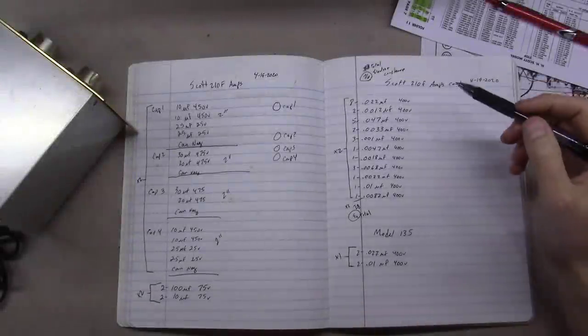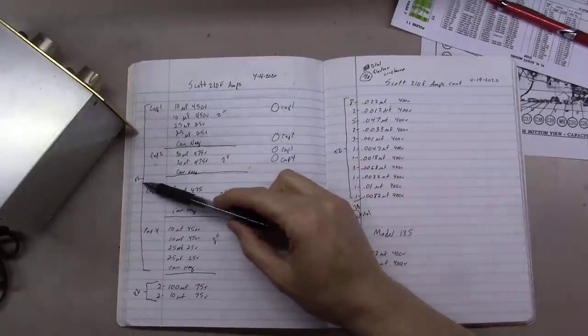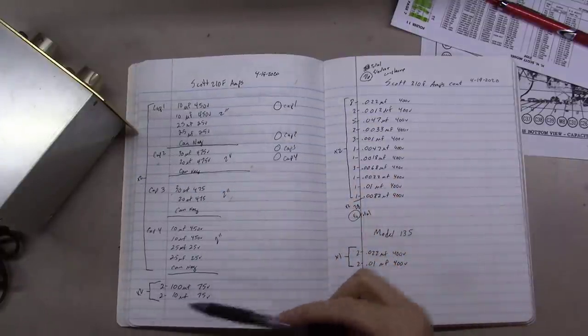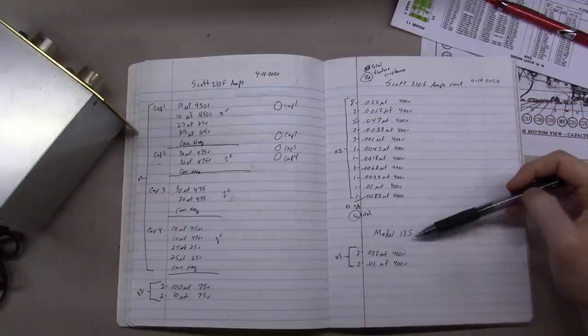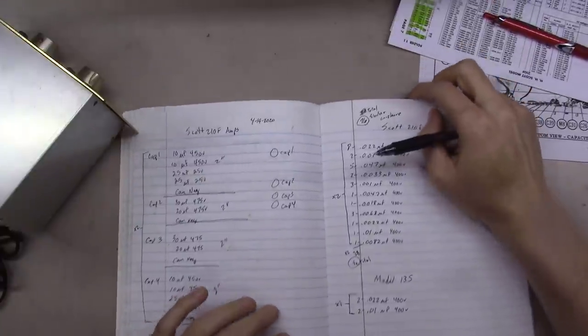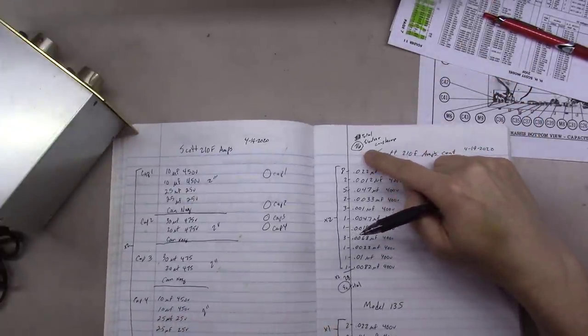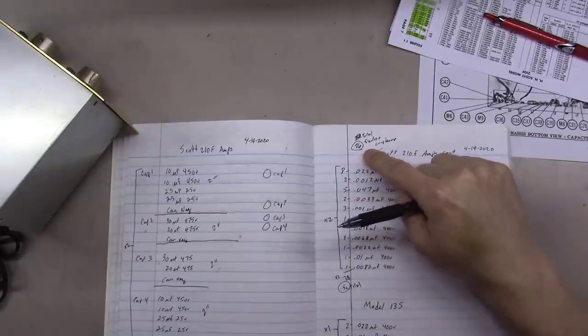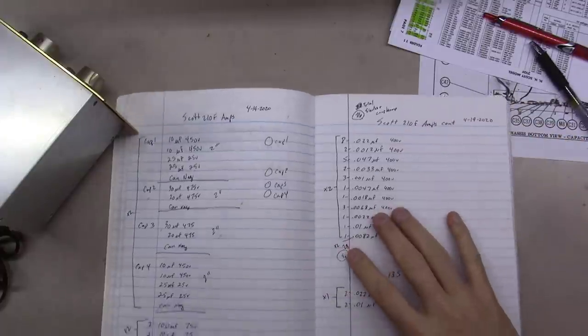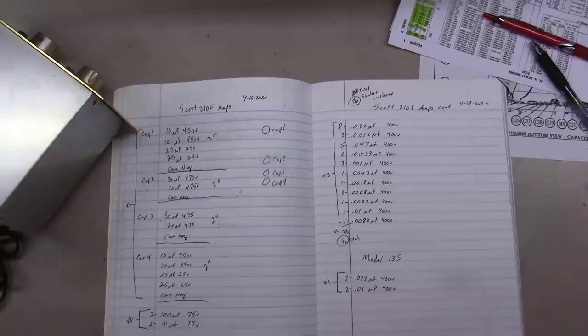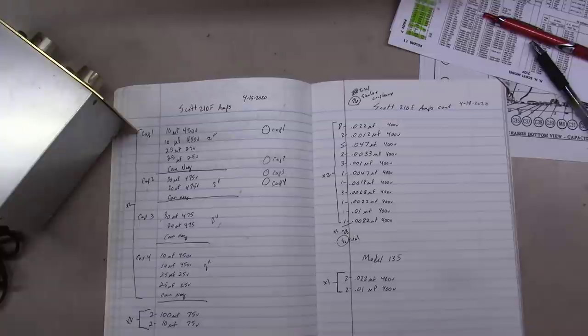OK, we've kind of got our parts ordered together now. We've got all these times two. We've got these times two. We've got all these times two. We've got these times one because these are in the Model 135. That brings us to a total needed for the complete restoration on both of these units of 76 capacitors. So I'm getting ready to jump on the phone with the individual that owns these units. And we'll see which route he wants to go here. I think he might have been thinking high-end, but when he sees 76, maybe we land somewhere a little south of that. We'll see.